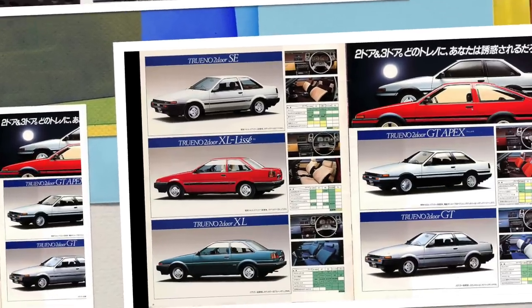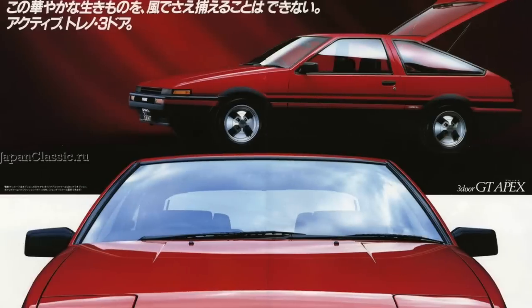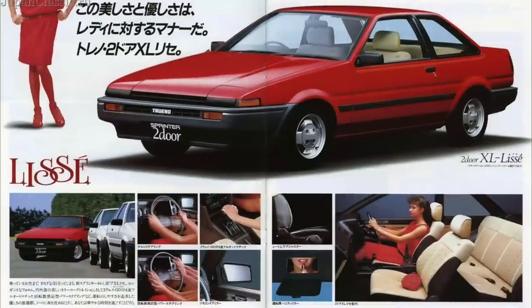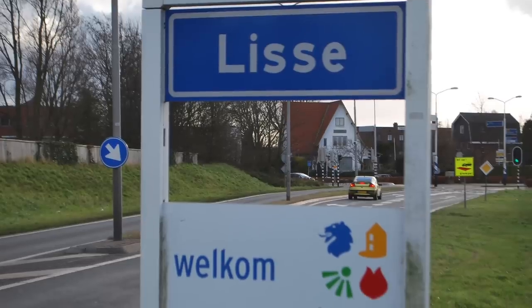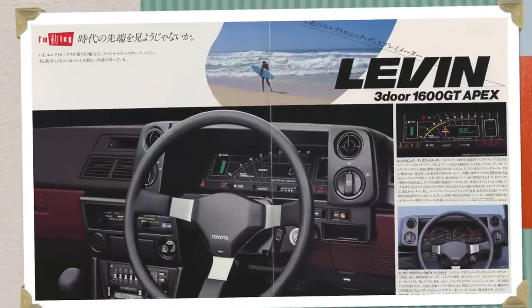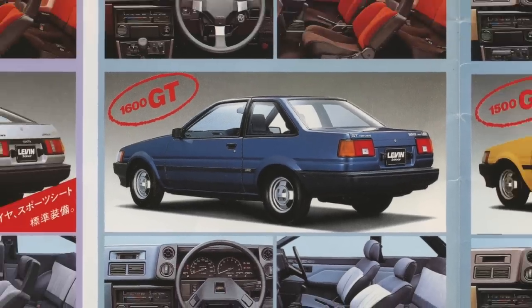In Japan, these two dials were only available on the Trueno GT Apex SE and Levin SE models — or 'Lisse' models as we would call it in the Netherlands, we have a town called Lisse. And for the Levin: the GT Apex, the GTV, and the GT models.